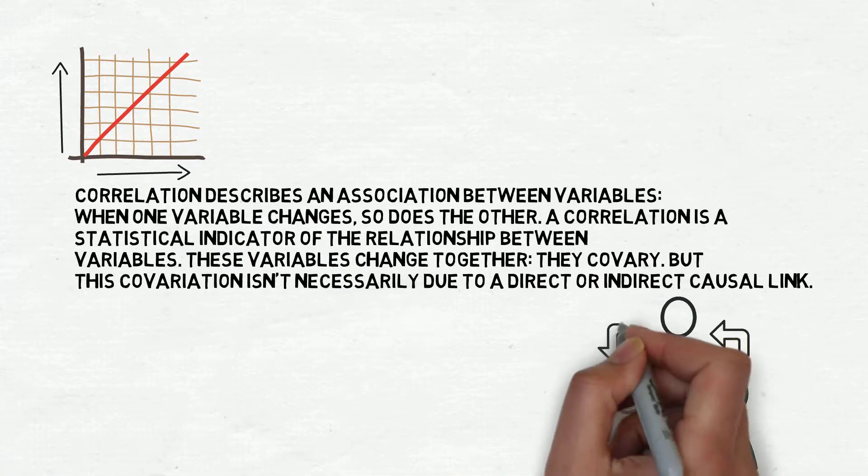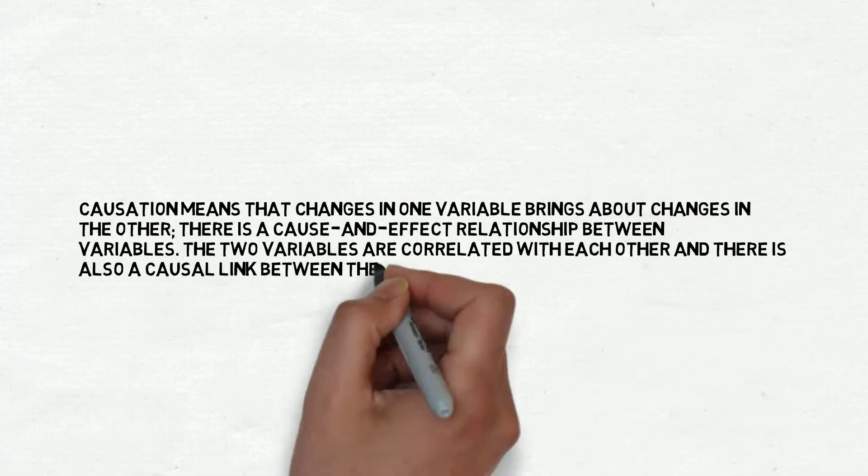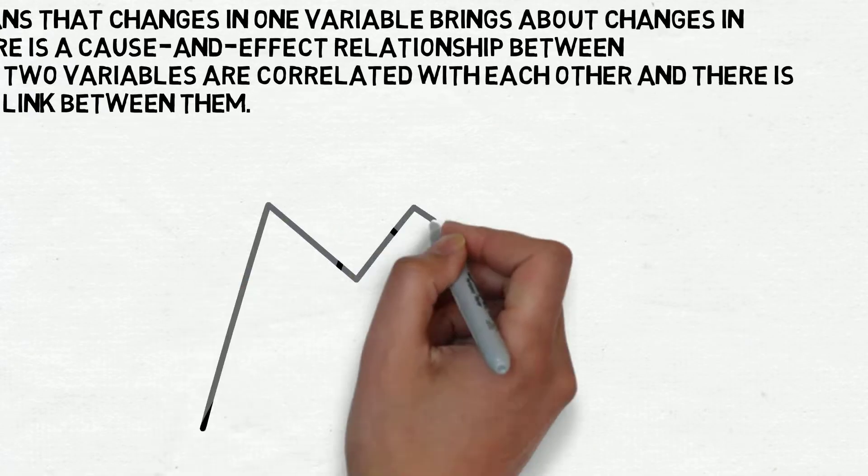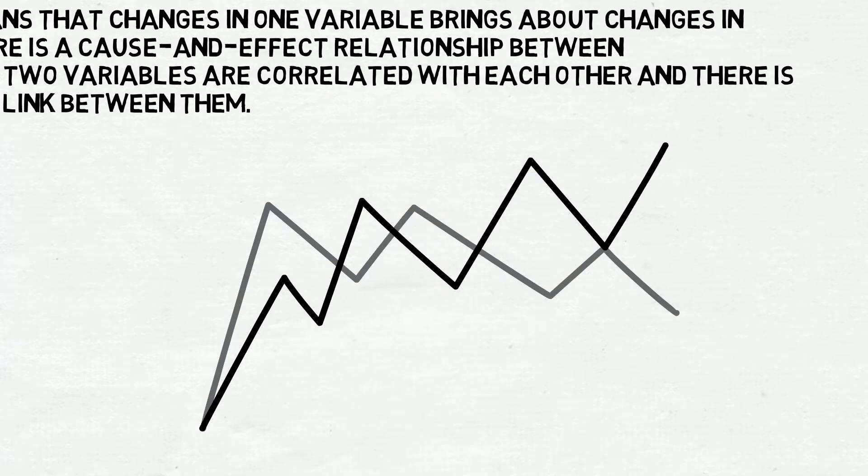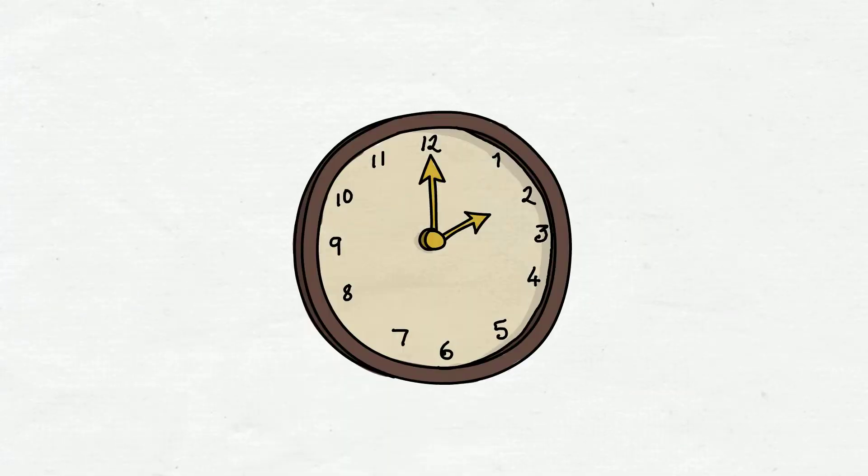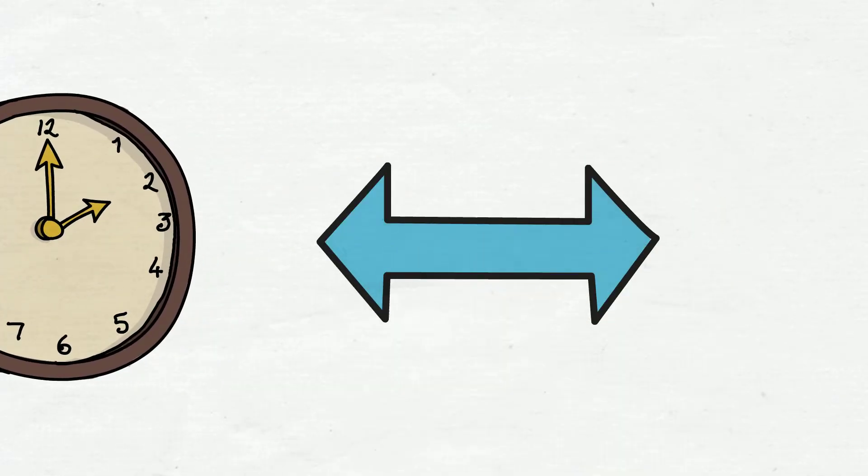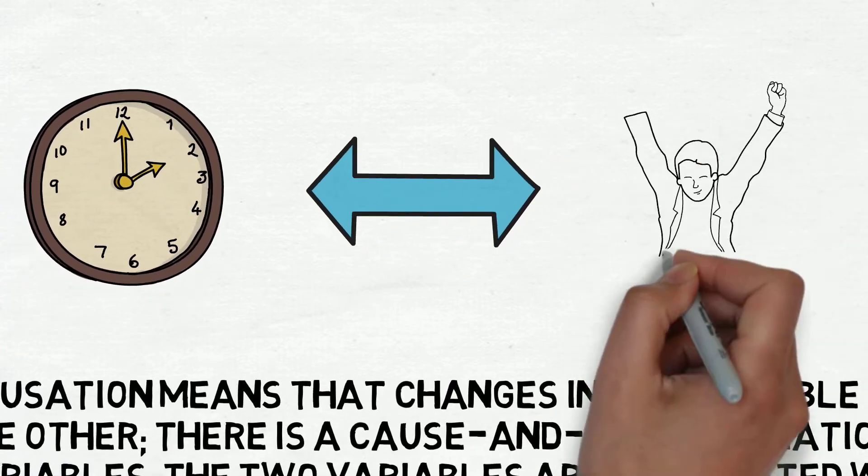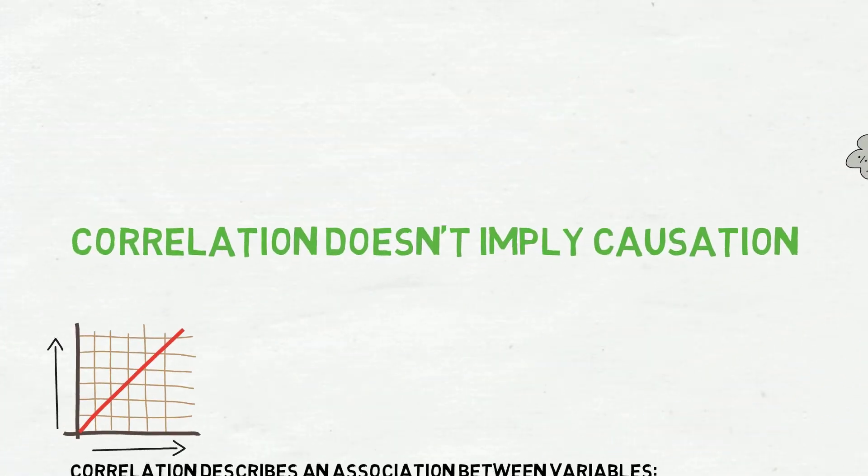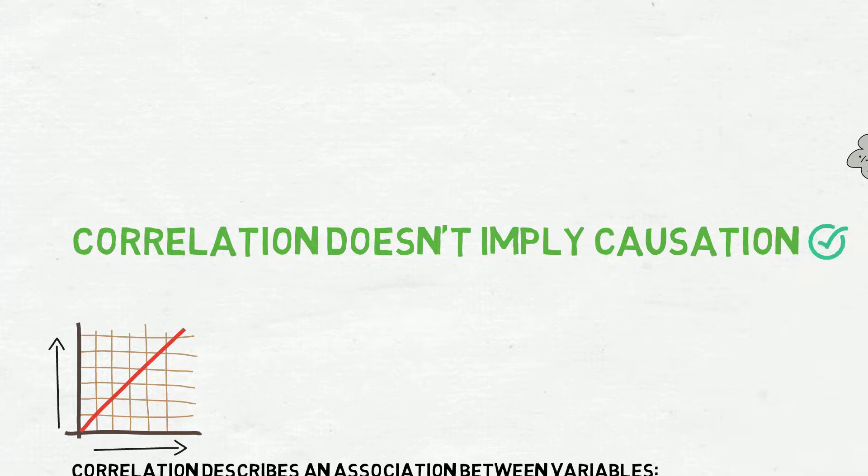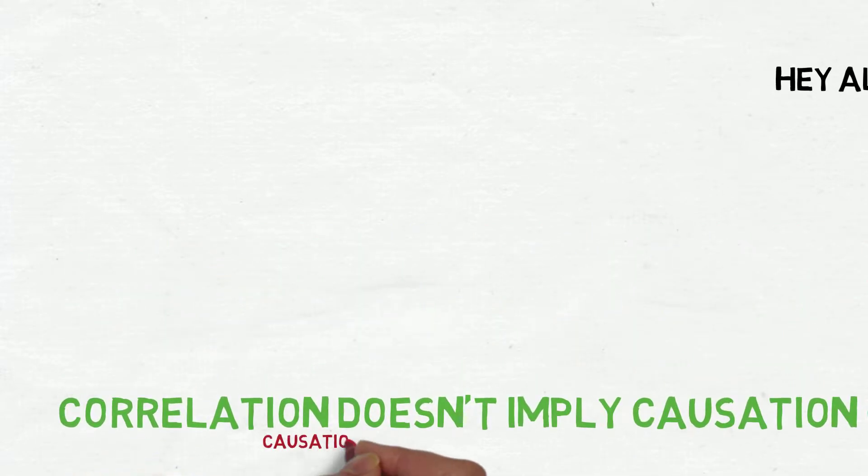a direct or indirect causal link. Causation means that a change in one variable brings about change in another. There is a cause and effect relationship between the variables. The two variables are correlated with each other; there is also a causal link between them. We all know that correlation doesn't imply causation, but causation always implies correlation.